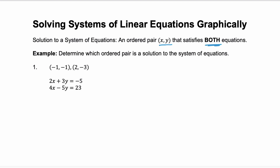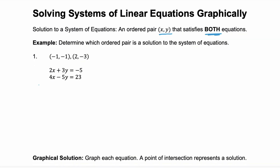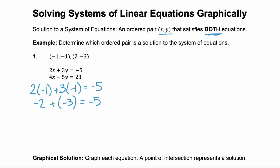Let's start with the ordered pair negative 1, negative 1. We substitute that into our first equation and check that it equals negative 5. 2 times negative 1 is negative 2, plus 3 times negative 1 is negative 3. Negative 2 plus negative 3 is negative 5. And negative 5 does equal negative 5. So this first ordered pair, negative 1, negative 1, does work within our first equation. So let's check it in the second equation.